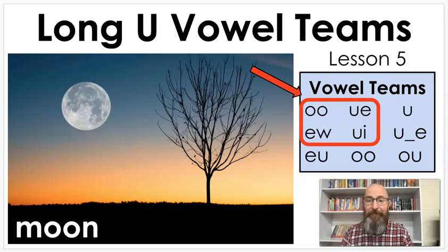Hello readers, and thank you for joining me for another phonics lesson. We are on lesson number five of our long U vowel teams. This week, we've been looking at the vowel teams that are spelled O-O, U-E, E-W, and U-I. And those vowel teams really make more of an OO sound than a U sound, but they're still in that category.